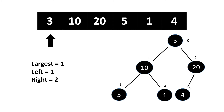Now we check if the element at index two is greater than the element at index one, which is the largest node. Yes, twenty is greater than ten, so now our largest becomes index two. After that we need to do swapping between the largest element and the parent node — that means swapping three and twenty — and now our largest is at index two.